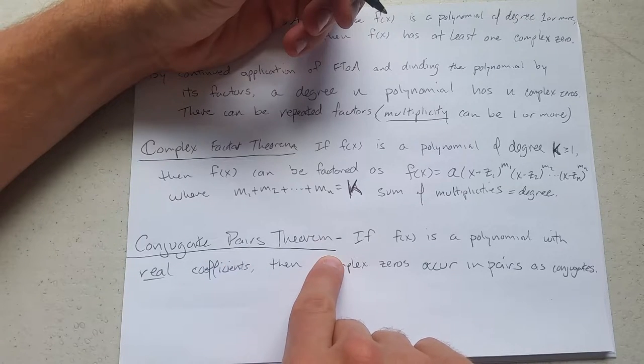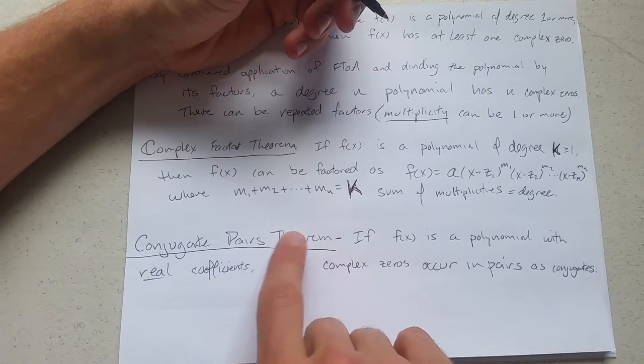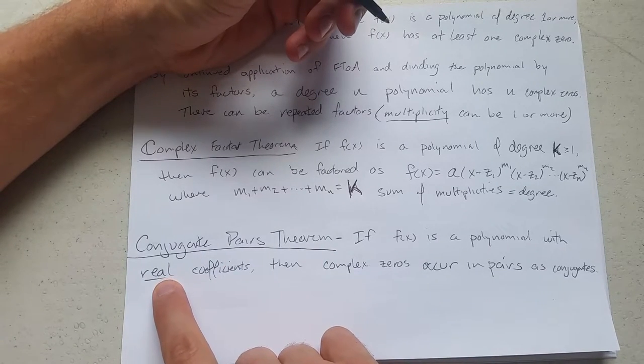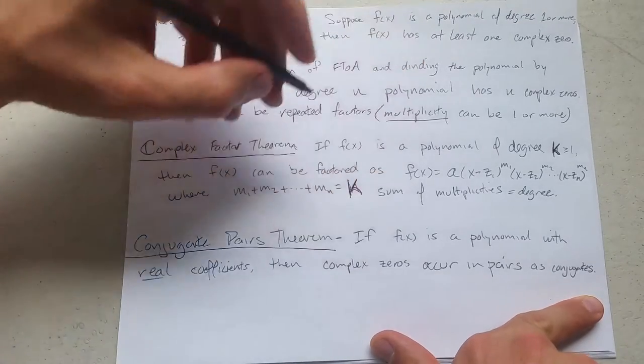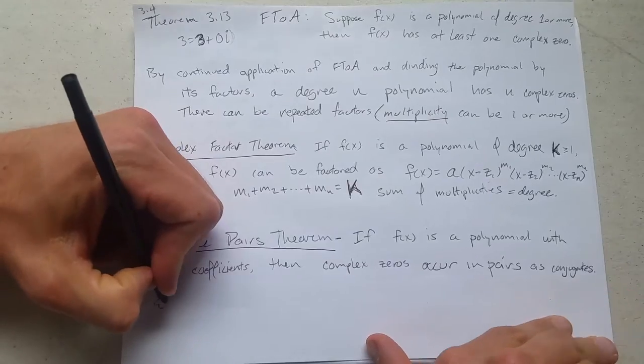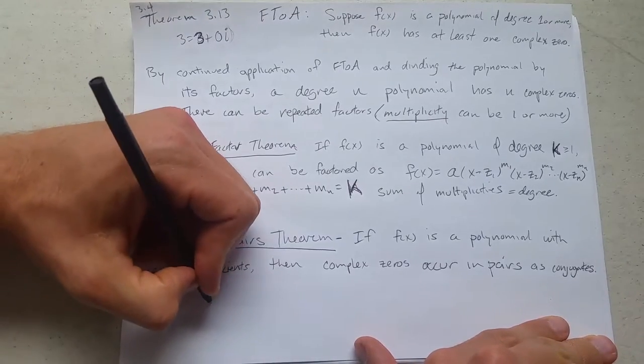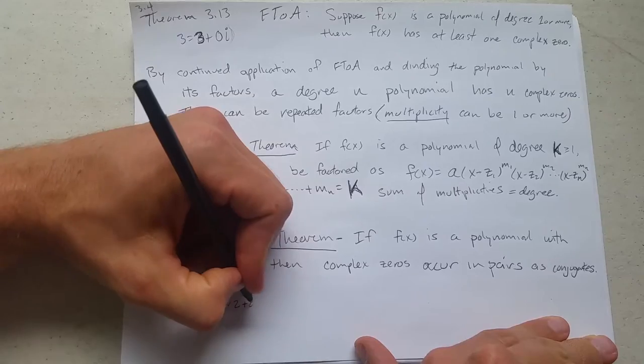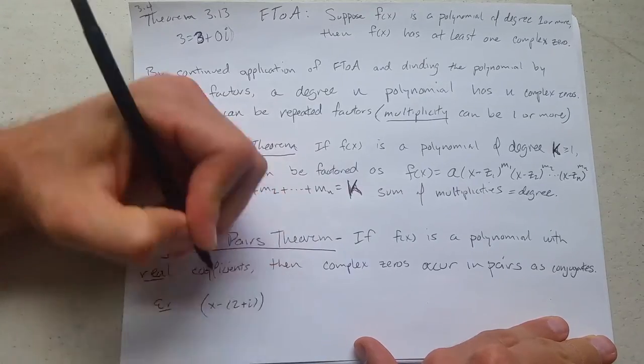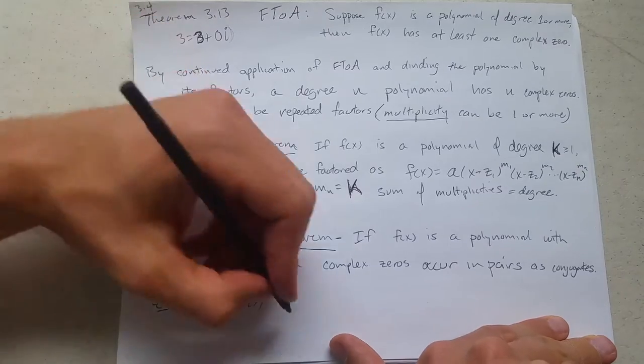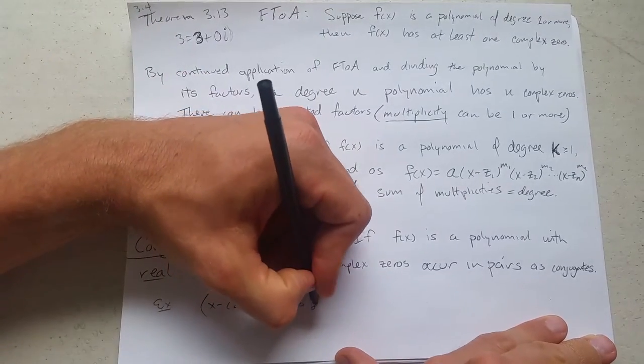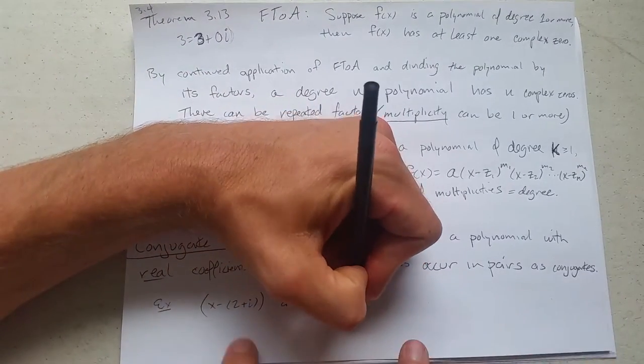Conjugate pairs theorem: if we started out with a polynomial that had real coefficients, then complex zeros occur in pairs, and they occur in conjugate pairs. So what this means, let's say this is a factor and your polynomial was real, you would also get—and you want to be careful—